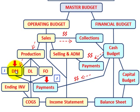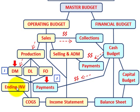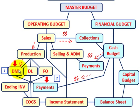Going back to direct materials, we have to determine the quantities and costs, and then determine the payment amounts for those purchases. Direct materials, direct labor, and factory overhead go into ending inventory for whatever we produce, and whatever we sell goes into cost of goods sold, which flows into the income statement. This is where the direct materials budget fits in — under the operating budget.